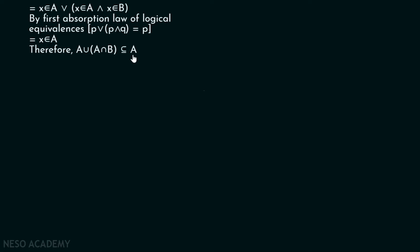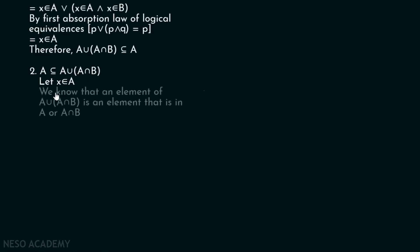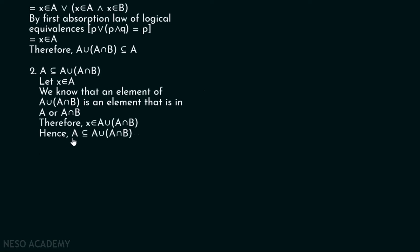Now let us prove the other side: A must be a subset of A union A intersection B. Let X belong to A. We know that an element of A union A intersection B is an element that is in A or A intersection B — either in A, in A intersection B, or in both. Since X belongs to A, A union A intersection B must be true. Therefore, X must belong to A union A intersection B. Hence, A is also a subset of A union A intersection B. So, A union A intersection B is equal to A.